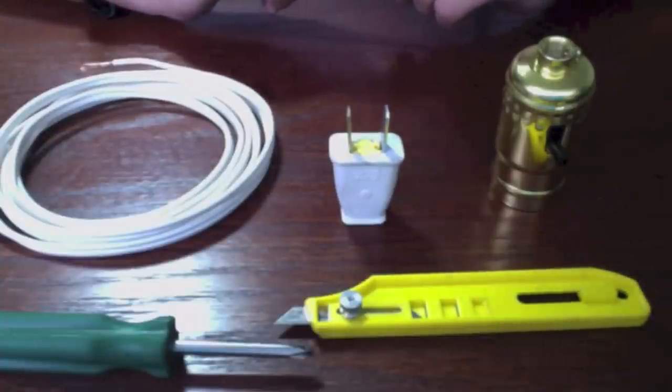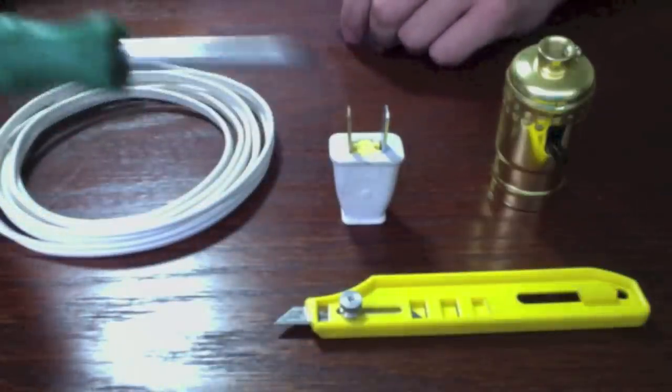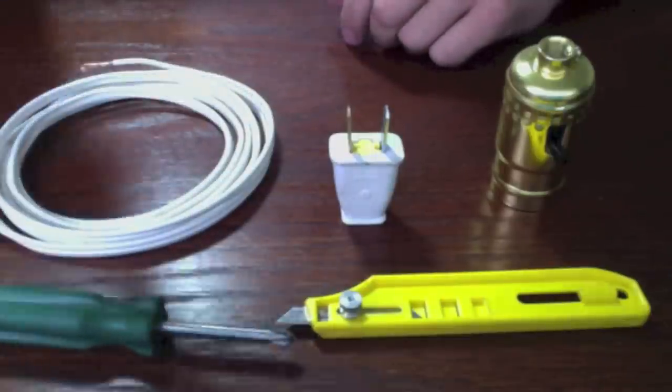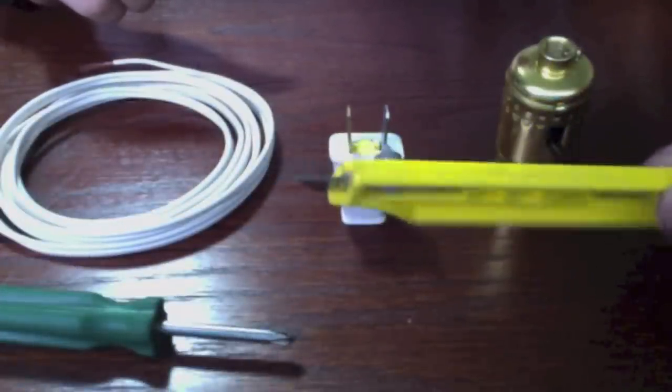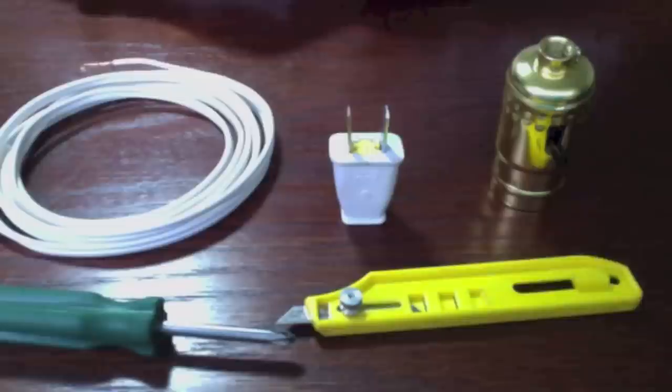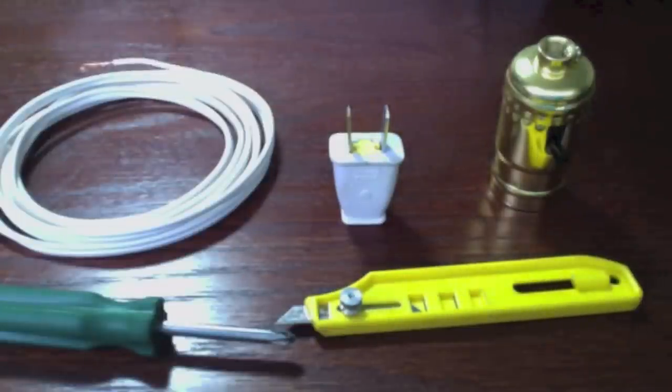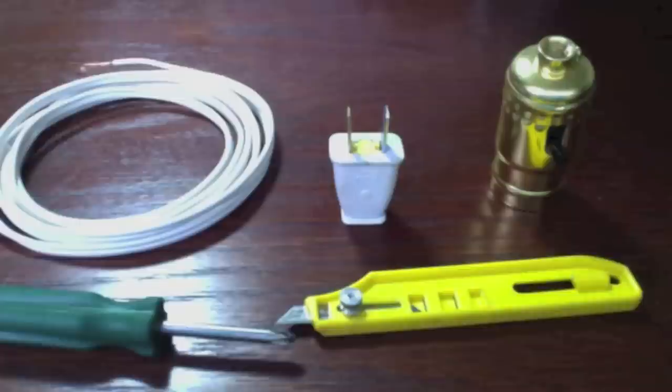As for tools, all you really need is a screwdriver. Flathead or Phillips head usually both will work. And you'll also need a knife. An X-Acto knife usually works better for stripping the ends of the wire. Also, of course, you'll need a light bulb. Any standard light bulb will work.